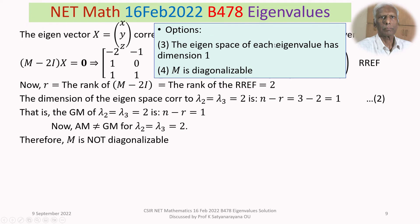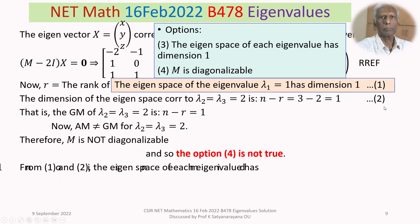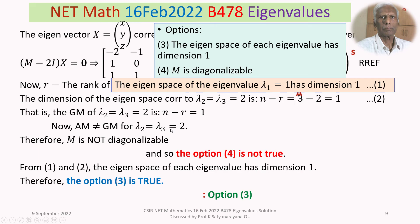Option 4 says M is diagonalizable, but it is not — so option 4 is not true. The eigenspace of lambda1 = 1 has dimension 1, and the eigenspace of lambda2 = lambda3 = 2 also has dimension 1. Therefore the eigenspace of each eigenvalue has dimension 1, which is precisely option 3. Our answer is option 3.